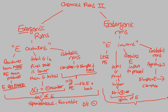Overall, endergonic reactions are not spontaneous, not favorable, and have a positive delta G. So we have exergonic reactions with energy outward and endergonic reactions with energy inward — and that explains Chemical Reactions 2. We'll continue our study of endergonic reactions in the next video, specifically looking at why they're there, what their purpose is, and how they even happen if they require energy and have non-spontaneous, unfavorable characteristics.